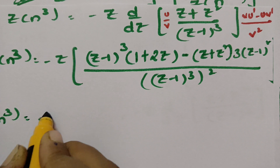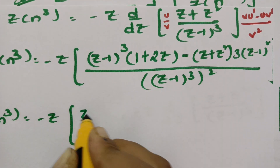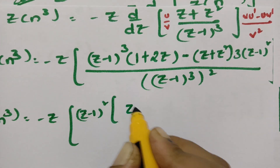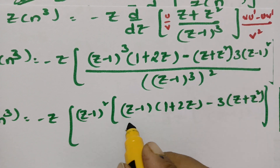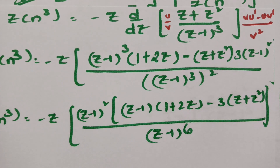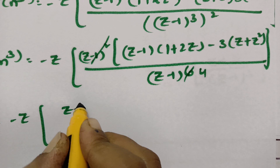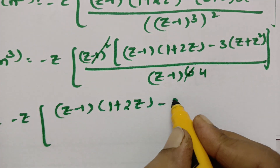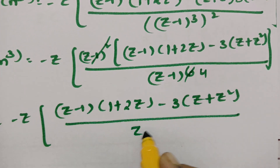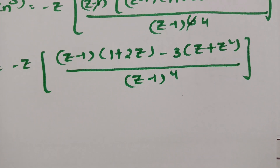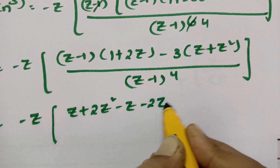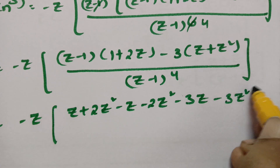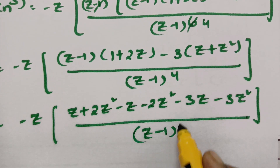Z of n cube equals minus z times of, taking z minus 1 whole square as common: z minus 1 into 1 plus 2z minus 3 times z plus z squared, all over z minus 1 to the power 6. After cancellation by 2, this becomes minus z times of z minus 1 into 1 plus 2z minus 3z plus 3z squared by z minus 1 to the power 4.